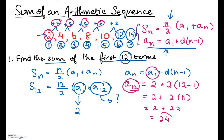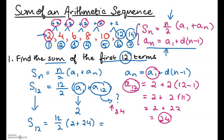Substituting back, S of 12 equals 12 over 2, which is 6, times (2 plus 24). That gives us 6 times 26, which equals 156. So 156 is the sum of the first 12 terms — that's our final answer.